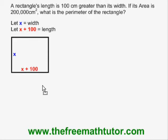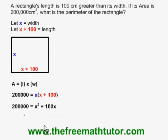Now I need to use the area formula for a rectangle and plug in the values, my variables and the 200,000 area. Simplifying, I'm multiplying across the bracket and converting my equation into a quadratic.